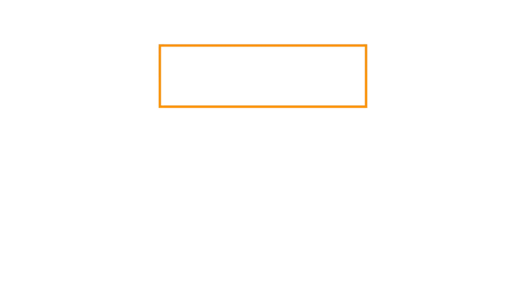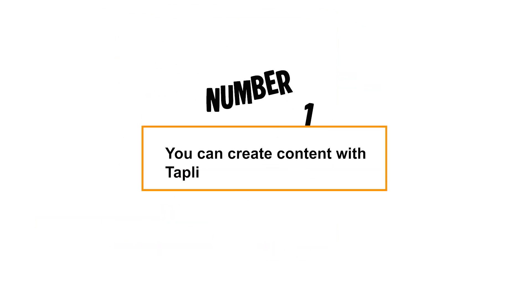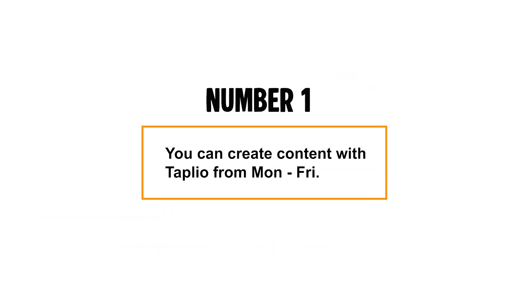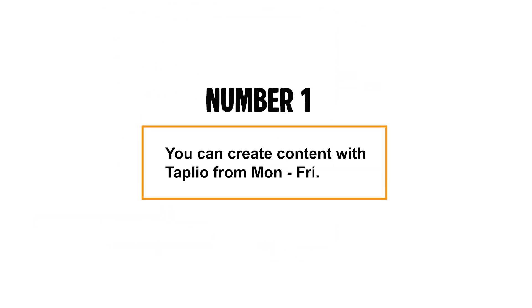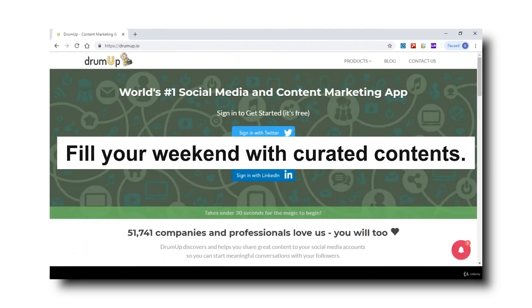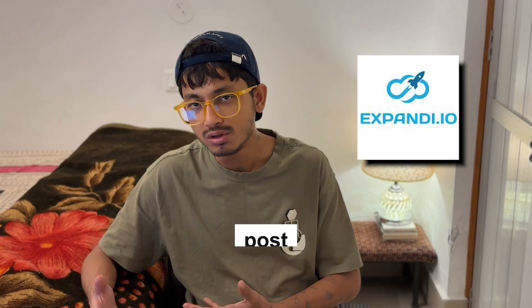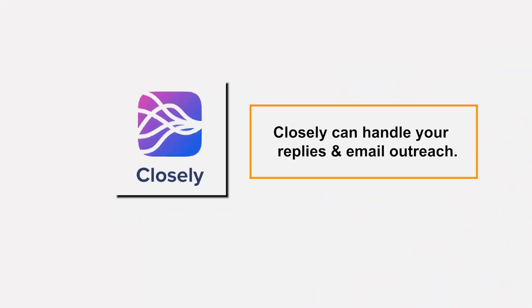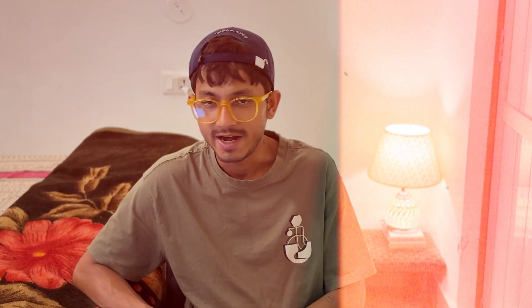Here's a daily workflow example for using all these LinkedIn AI tools. Number one: create content with Taplio from Monday to Friday. Use DrumUp to fill your weekends with curated content. Then use Expandi to connect with all the commenters and likers on your posts, while Closely handles your replies and email outreach.